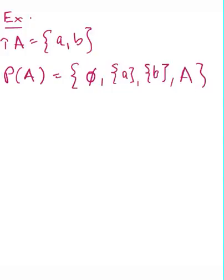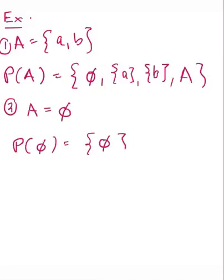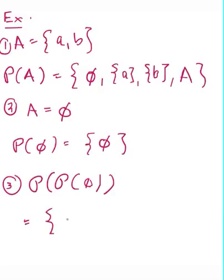So this is example one. Another example would be, what if A were equal to the empty set? Then the power set of the empty set, well the only thing that's a subset of the empty set is the empty set itself. So it has one element. And the power set of the power set, we could iterate this process, and if you compute this, you actually end up getting the empty set and the set containing the empty set.